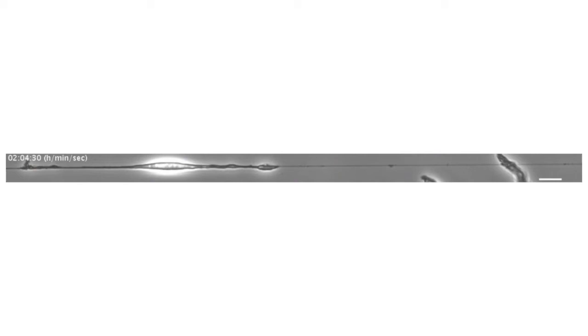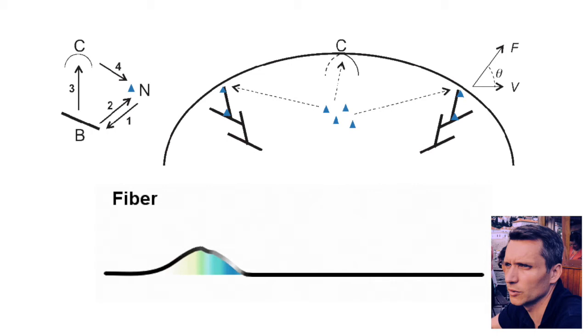Observing how actin polymerization drives the fins' propagation was difficult, however, because the fins rotate around the cell's forward extension as they move toward the leading edge. The researchers therefore teamed up with Alex Mogilner from New York University to mathematically model the cell's protrusive behavior.